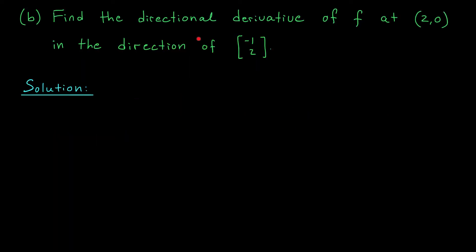In part b, we're looking for the directional derivative of our function at (2, 0) moving in the direction of (-1, 2). We could write down the old formula, but let's use the compact formula in terms of the gradient vector. The directional derivative at (2, 0) moving in the direction of a vector u is equal to the dot product of the gradient vector del f at (2, 0) with the vector u.